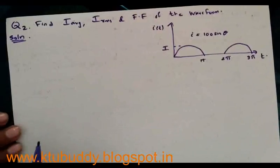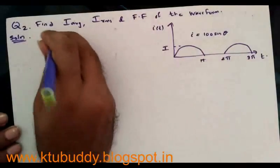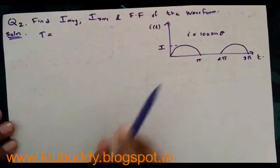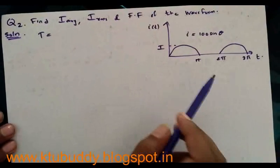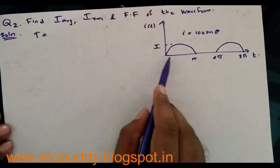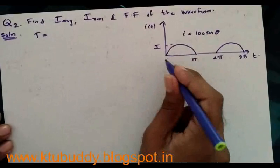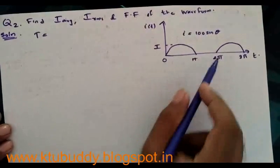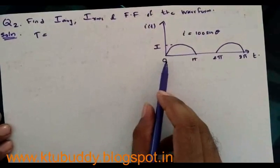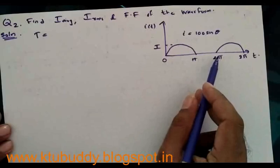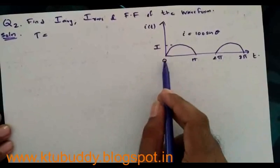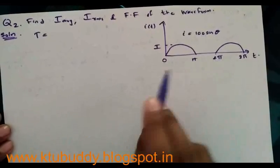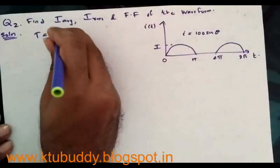First, we have to identify the time period of the waveform. The time period is defined as the time taken to complete one cycle, or one complete set of positive and negative values. Here, the time period can be determined from 0 to 2π, because the waveform starts to repeat its pattern from the point 2π. Therefore, the time period is equal to 2π.